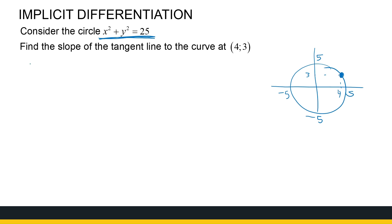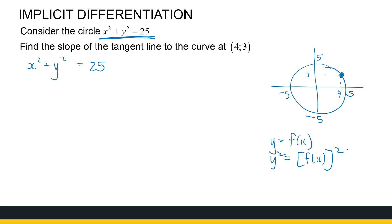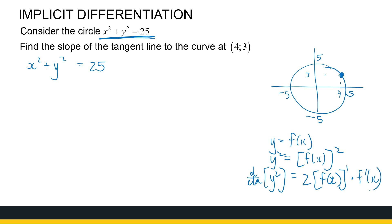What we're going to do is differentiate both sides of this equation. The trick comes into remembering that y is some function of x. So if we've got y squared, it's a function of x squared — a typical example of where we use the chain rule. The derivative of a function squared is 2 times the function to the power 1 times the derivative of the function.